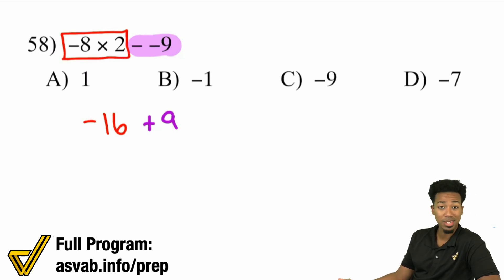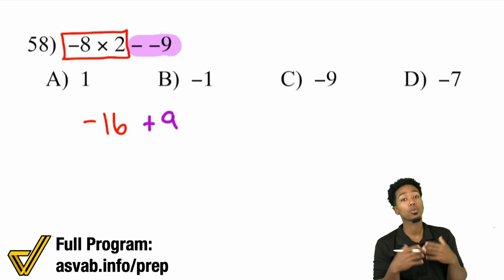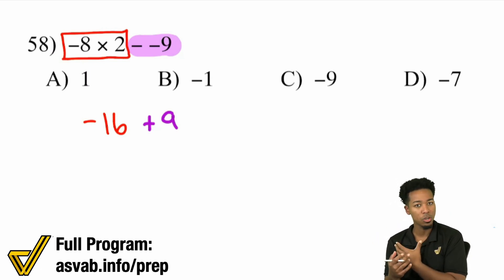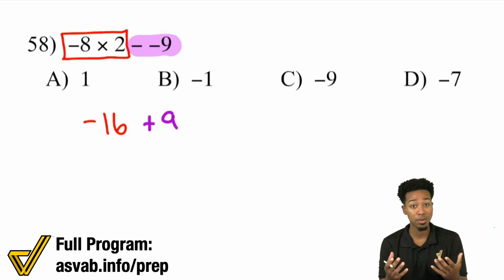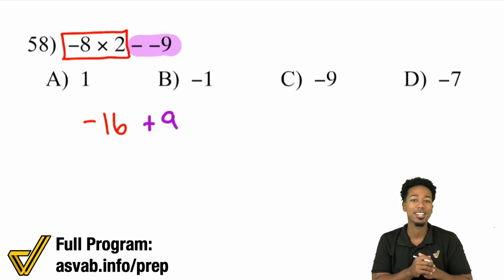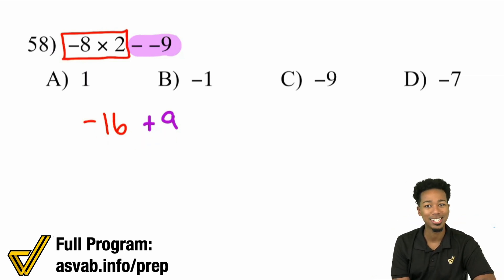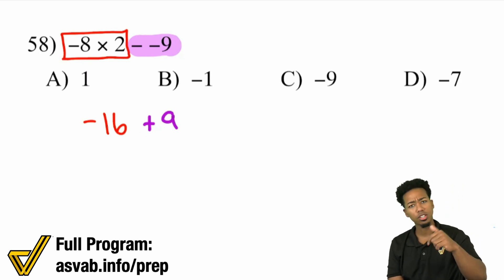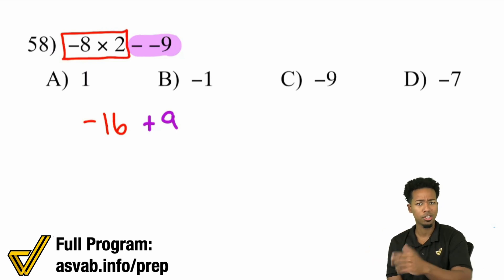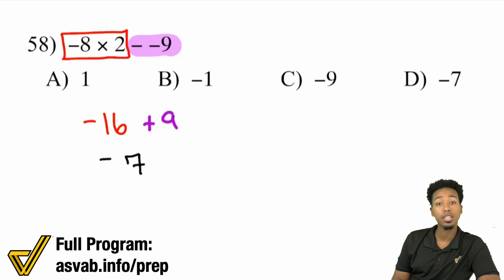When you have a negative and a positive being added, that's the same thing as subtracting the numbers, but you keep the sign of the bigger number. Negative 16 plus 9: 16 minus 9 is 7, but it's going to be negative 7 because the 16 is the bigger number — negative 16. So negative 7 is the answer.